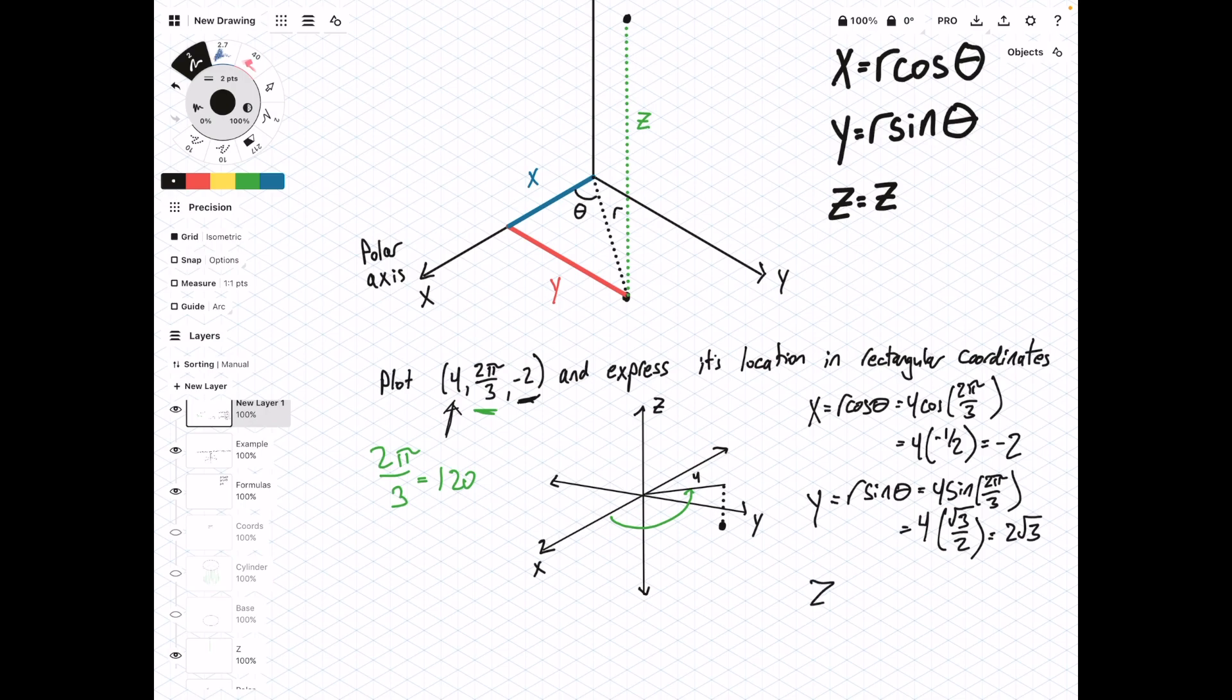And finally, z equals z, so I'll just write that again, and this is going to equal negative 2. So if we write all these coordinates out together, it's going to be negative 2, 2 radical 3, negative 2. And this is our coordinates in the Cartesian system.